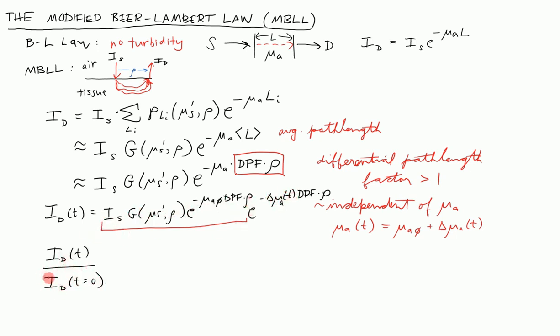I can write all of this stuff as the denominator, and then the only thing left over, ratioing the signal at a later time to its initial time, is this time-varying term. So I get e to the minus delta mu_A of t times this DPF factor times rho. This is now pretty powerful because the DPF is known.